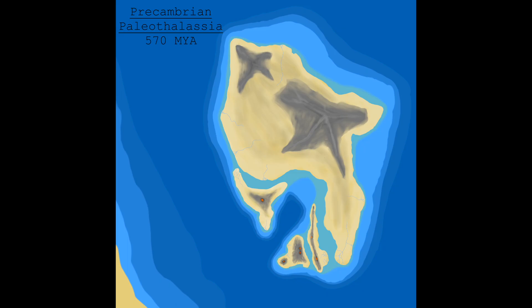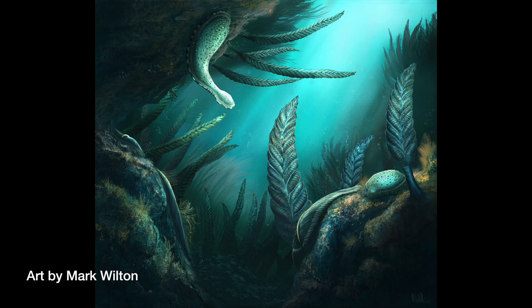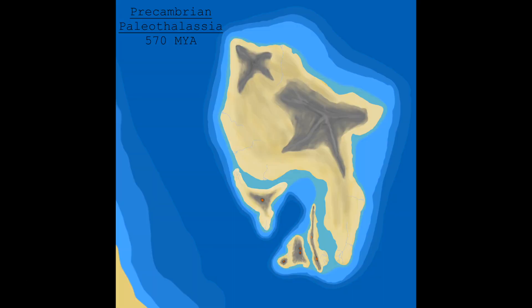Later in the Precambrian, it's undoubtable that due to the global presence of the Ediacaran biota, these archaic organisms like Dickinsonia, Cimbarella, and the Petylomans did exist in the waters off Paleophilacea's coastlines. But as of now, there are no examples of fossil-bearing Ediacaran rocks on the continent. In these Precambrian times, much of Paleophilacea was extremely inhospitable, with the only refuges for life being found in the microbial mats along the coastline.